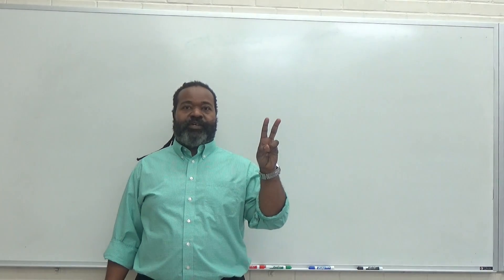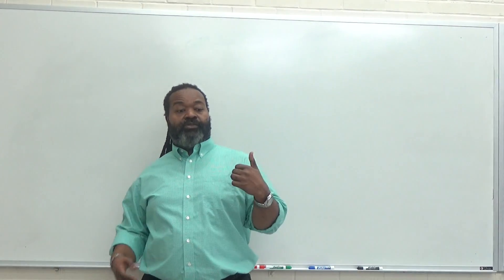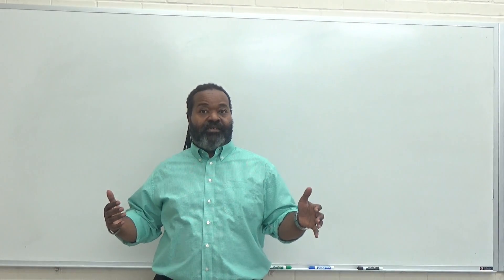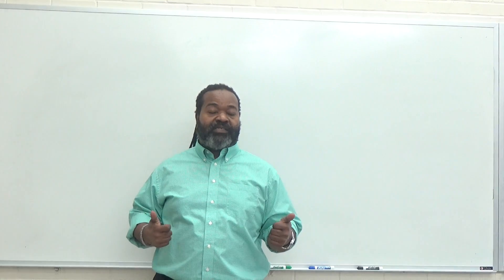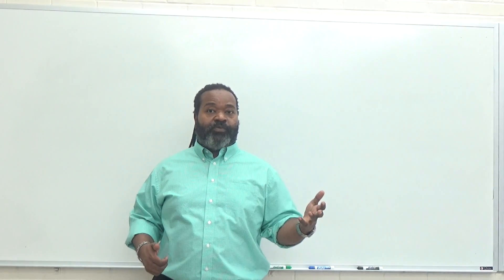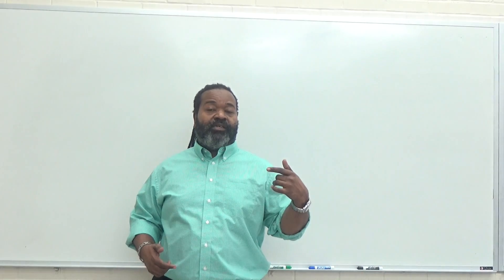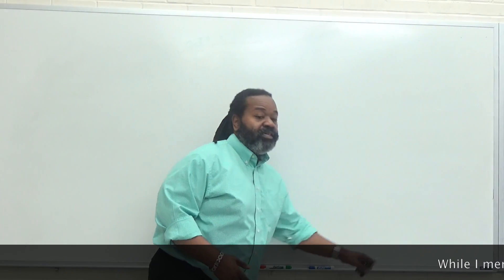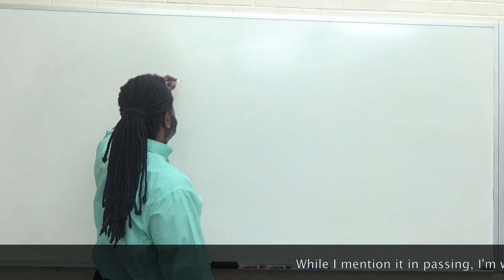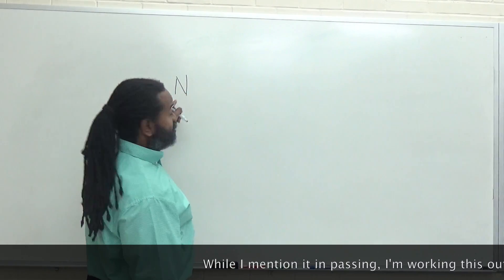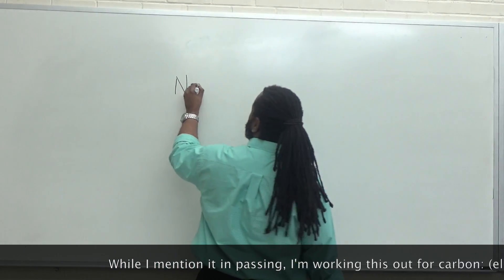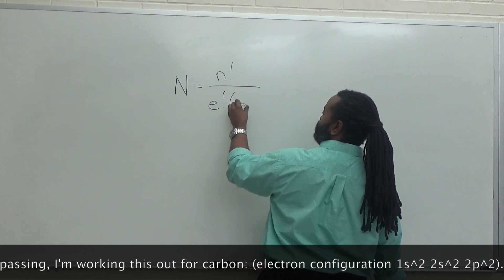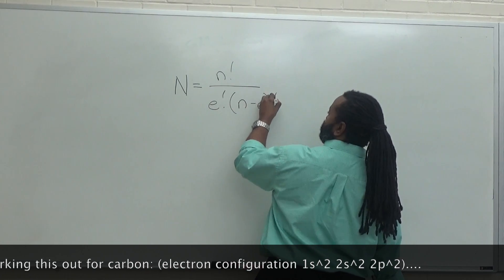The first two steps in the full microstates method require us to find the total number of microstates possible, and second, to find the range of possible values for the total spin and the range of possible values for the total momentum. So let's begin by determining the total number of possible states for step one. The number of states is going to depend on the number of positions, the number of electrons, and the number of holes.